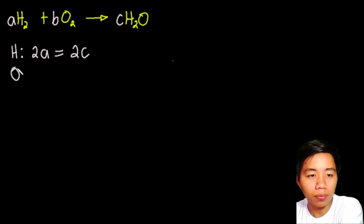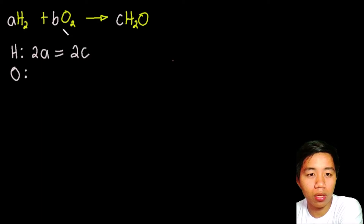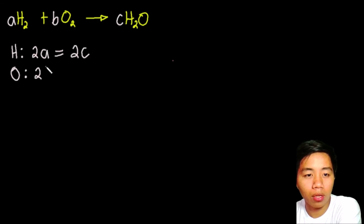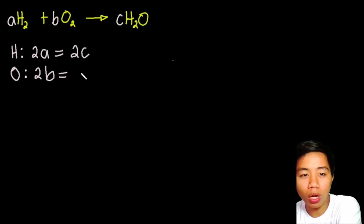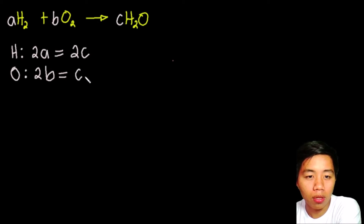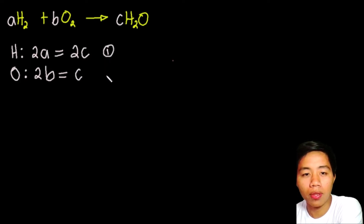Next, we have oxygen. For oxygen, we cannot see any oxygen atoms in H2, so we leave it and proceed with O2. We have 2 times the letter coefficient B, so 2B. We replace the arrow sign with an equal sign, and then we proceed with H2O. We have 1 oxygen times the coefficient C, so 1C, or simply C. So we have our two equations: the first equation is 2A equals 2C, and the second equation is 2B equals C.